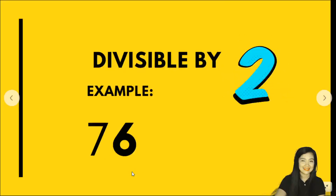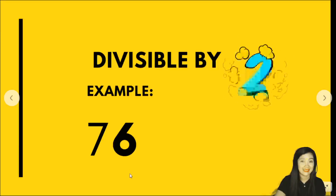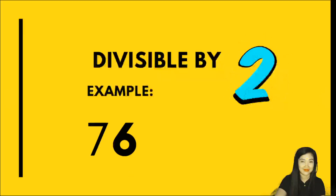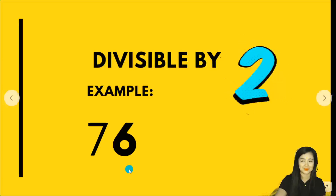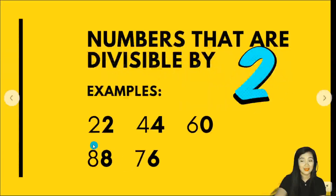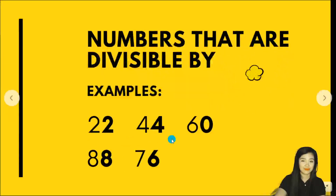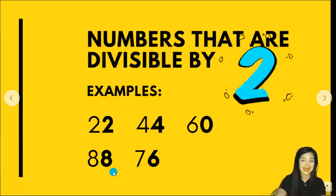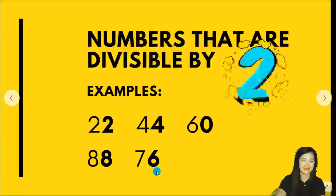Next example is 76. In 76, the 1's digit is 6, and it's an even number. Therefore, it is divisible by 2. Numbers 22, 44, 60, 88, and 76 are all divisible by 2.